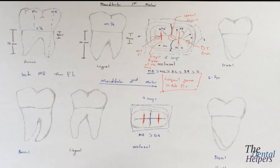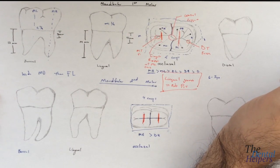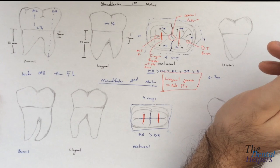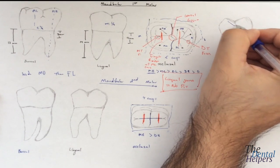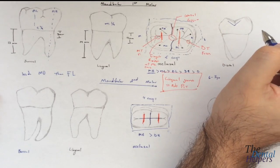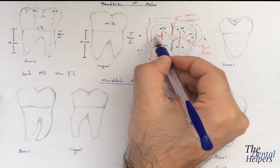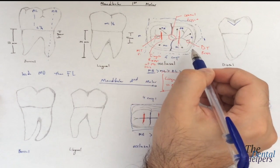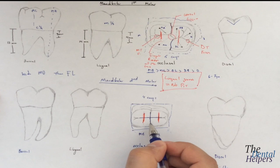In terms of the marginal ridges, the mesial marginal ridge is actually concave buccal-lingually, while the distal marginal ridge is short and V-shaped. So it's kind of a V-shape right here. The central groove has a zigzag pattern, while the central groove in the mandibular second is straight.